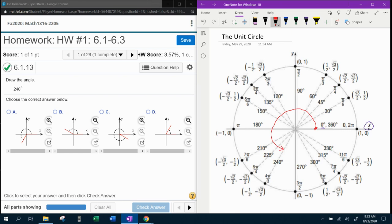And then that's how you would draw the angle. So if the unit circle wasn't here, you would draw this axis right here, the zero degree, the positive x-axis. And then you would come around with our red line until you get to 240 degrees. And then you would draw that line in too.